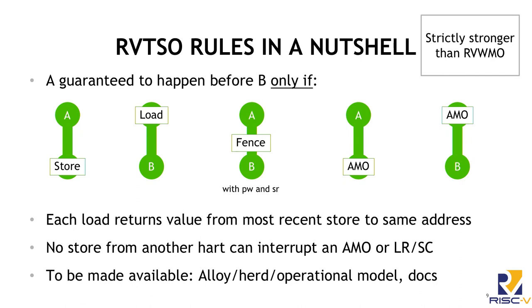For RVTSO — if hardware implements the ZTSO extension — it gets a bit simpler. It's load-to-load, load-to-store, store-to-store ordering as you'd expect; if you have a fence, nothing can be reordered past an atomic. Those are the rules. It keeps it simple, but it restricts some of the types of optimizations you can expose in hardware. I should clarify: the model describes what gets exposed to the programmer. You can still speculate and do all kinds of things in hardware — you just have to be able to cover it up if needed.